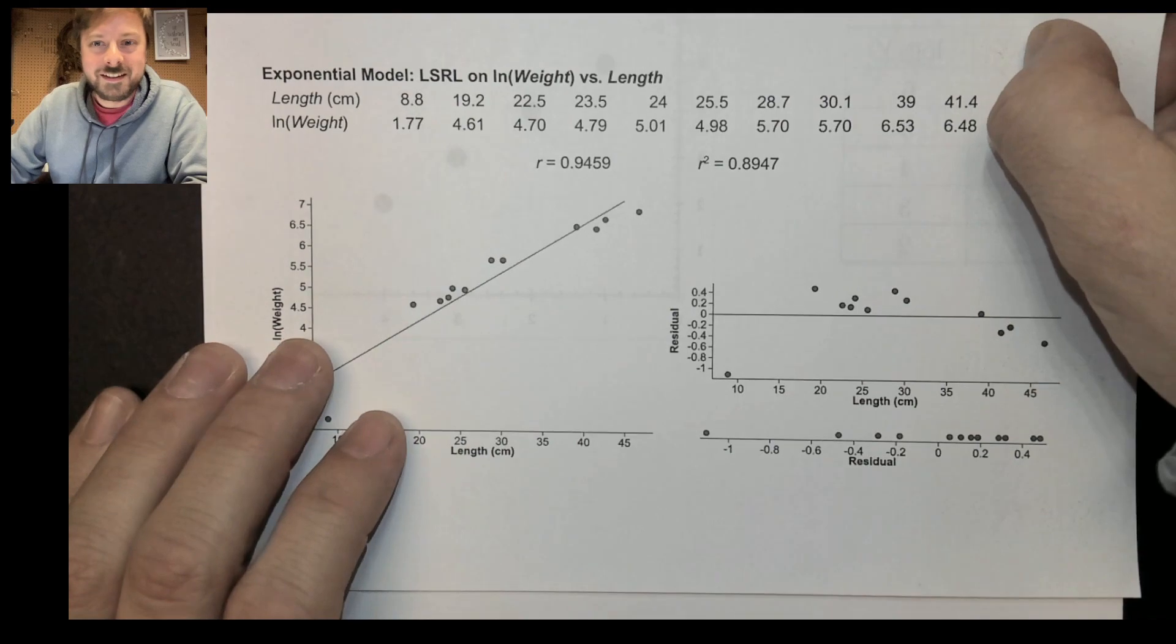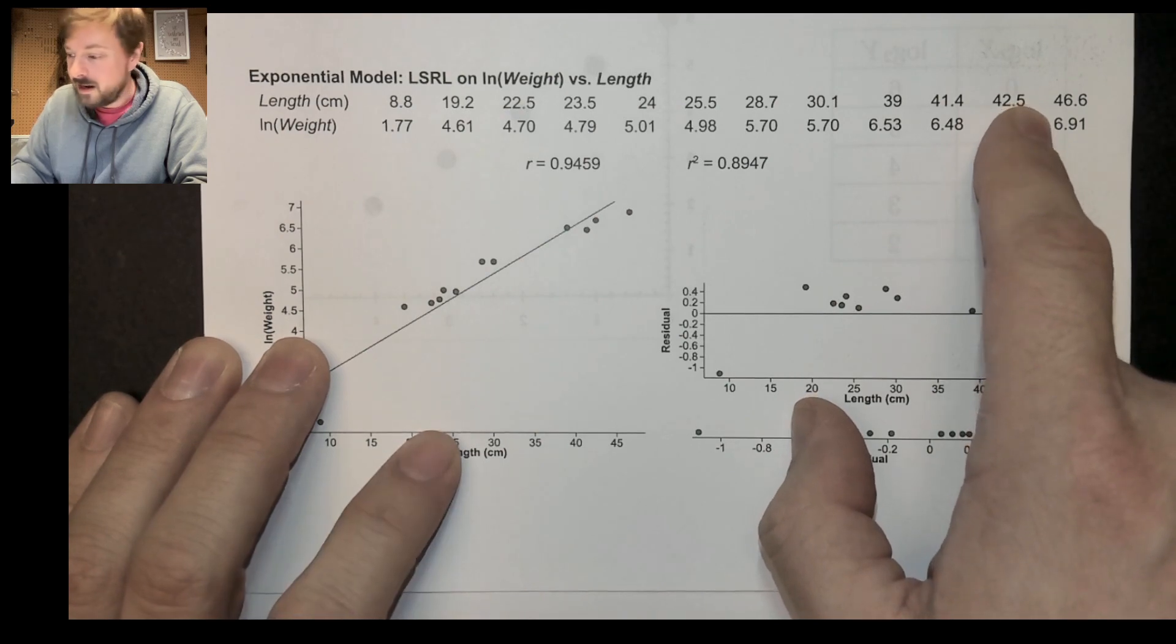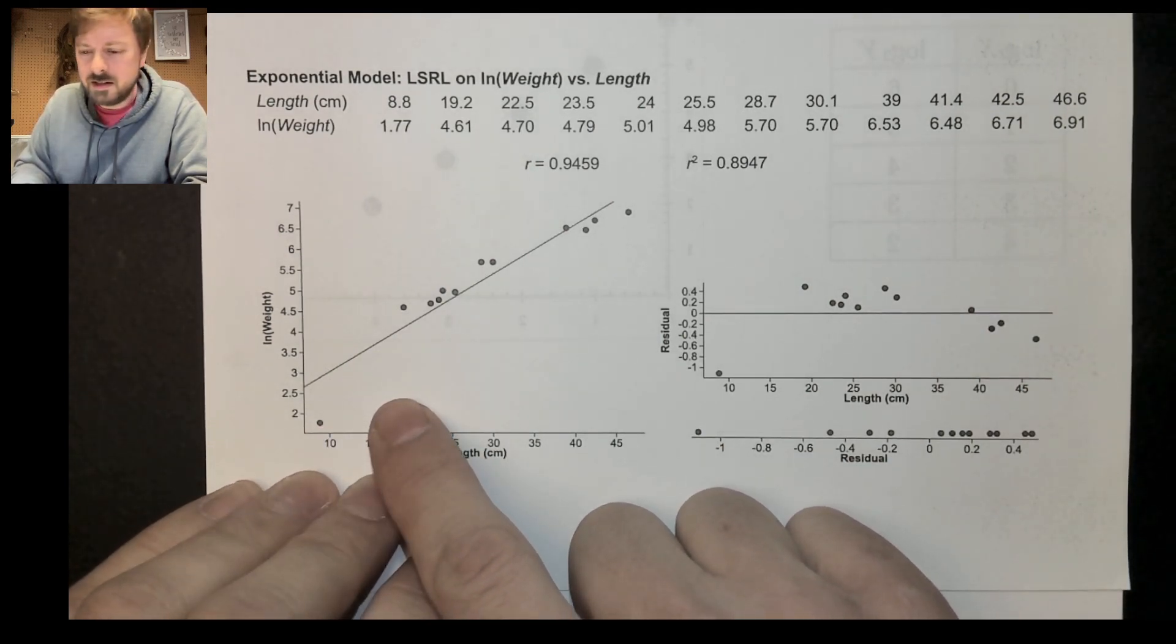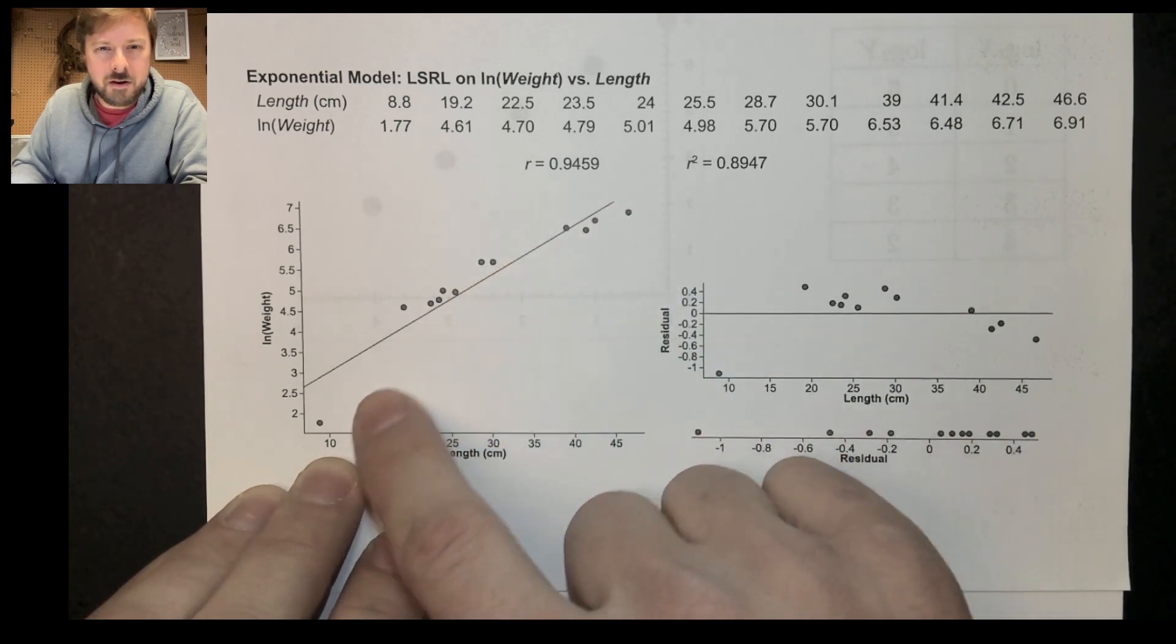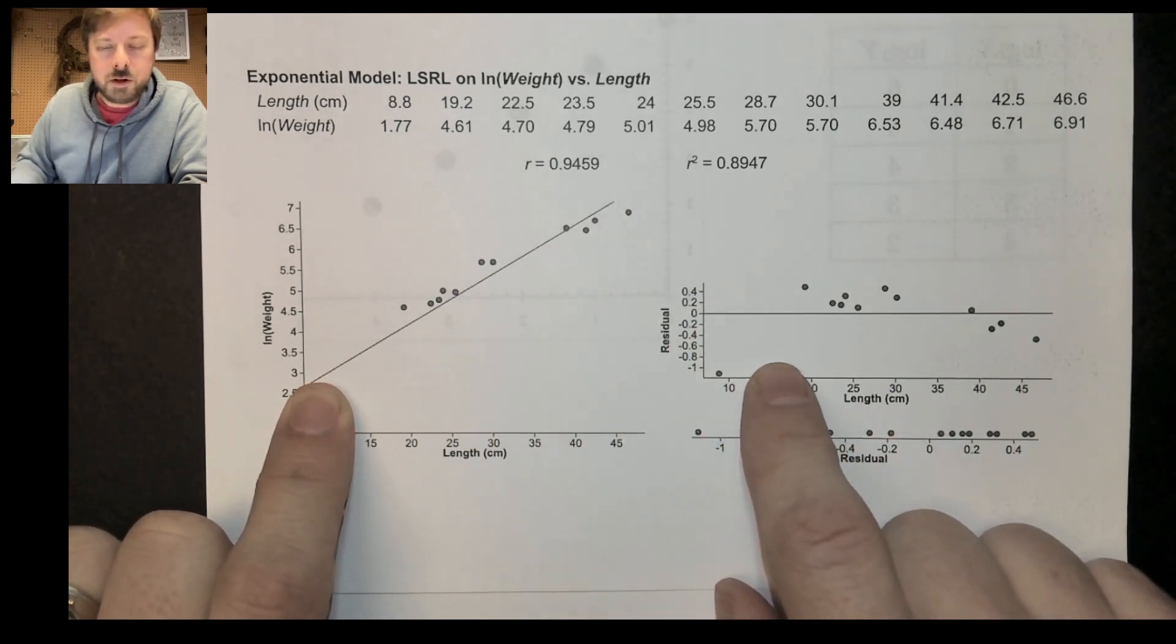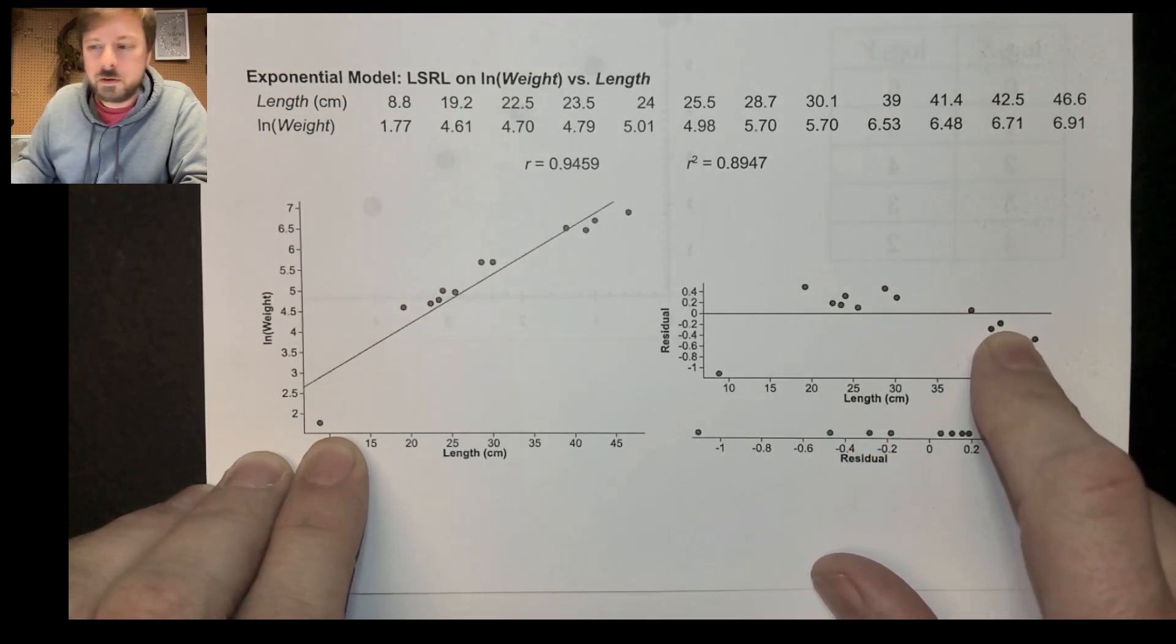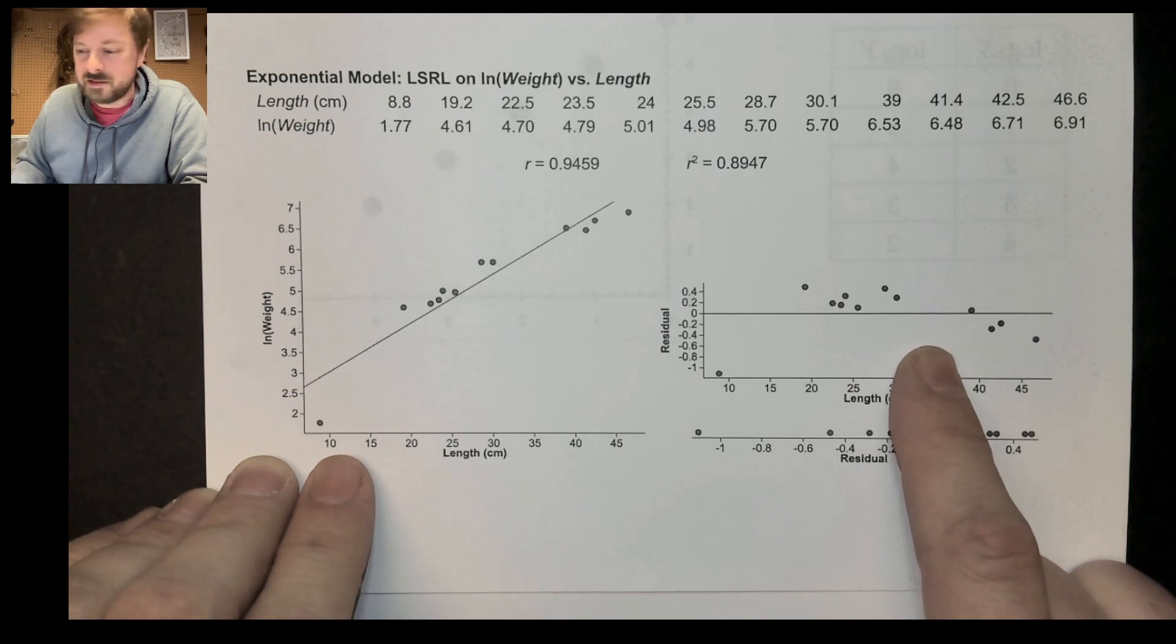Woo-hoo, look at that magical magic. So here, we have the lengths of the fish still, right? But then we have the natural log of their weights. And well, that should have made it linear. Did it? It didn't. Shoot. If I take a look here, it almost looks like it's curved in the other direction a little bit. But when you look at the residual plot, what do we see? Negative residual, positive residuals, negative residuals. Yeah. So I guess this exponential model isn't going to make this linear either.